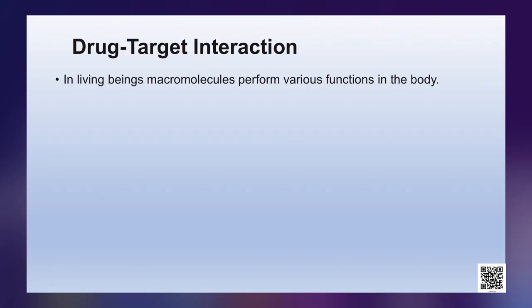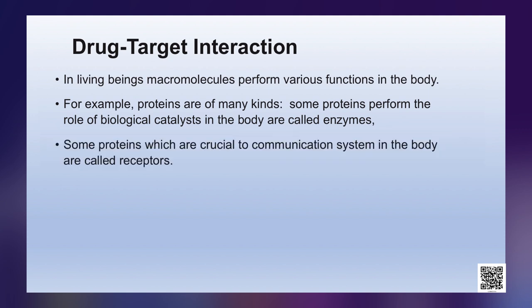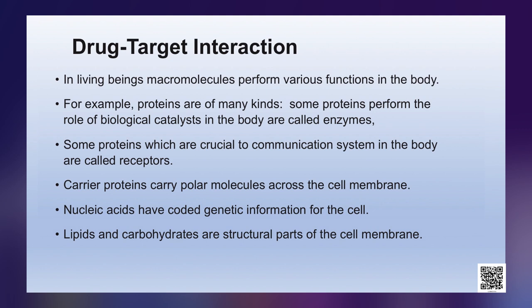Now we will discuss drug-target interaction. In living beings, macromolecules perform various functions in the body. Proteins are of many kinds — those that perform the role of biological catalysts are called enzymes. Some proteins crucial to the communication system in the body are called receptors. Carrier proteins carry polar molecules across the cell membrane. Nucleic acids have coded genetic information for the cell, and lipids and carbohydrates are structural parts of the cell membrane.